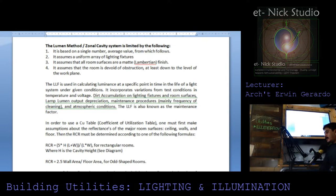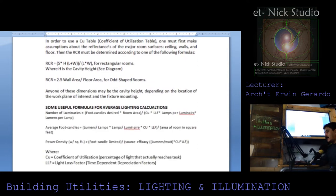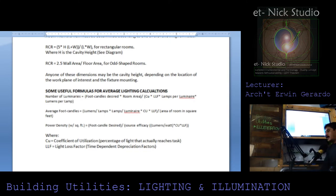In order to use the coefficient of utilization table, one must first make assumptions about the reflectance of the major room surfaces — ceiling, walls, and floor. Then the room cavity ratio must be determined. For rectangular rooms: RCR equals 5 times H times (length + width) divided by the floor area (length × width), where H is the cavity height. For odd-shaped rooms: RCR equals 2.5 times the wall area divided by the floor area.